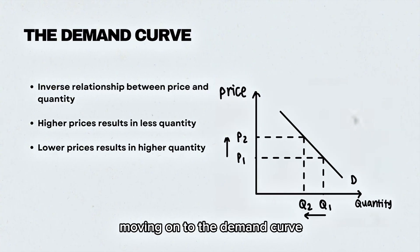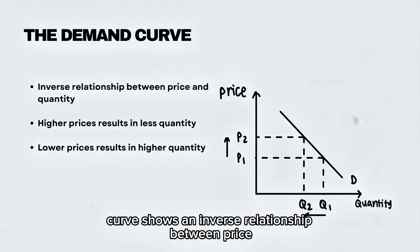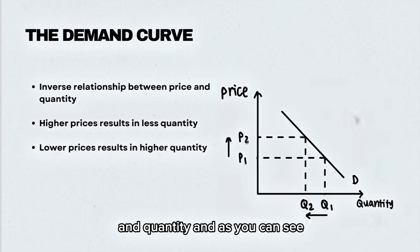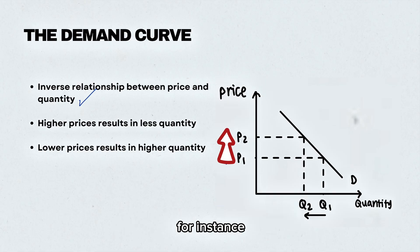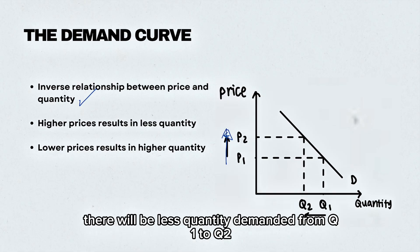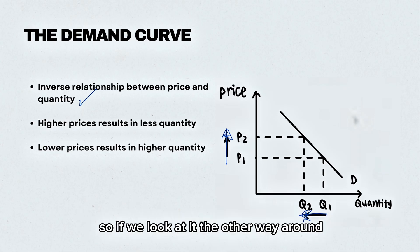Moving on to the demand curve. The demand curve shows an inverse relationship between price and quantity. As you can see, the higher the prices from P1 to P2, there will be less quantity demanded from Q1 to Q2. Looking at it the other way around, the lower the prices, there will be a higher quantity demanded.